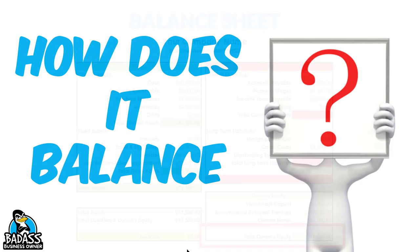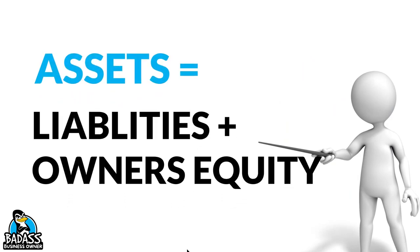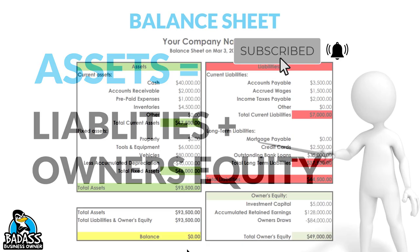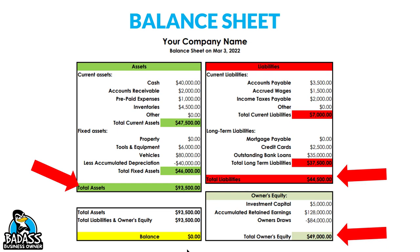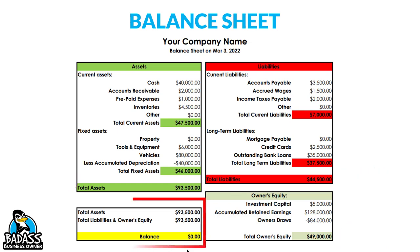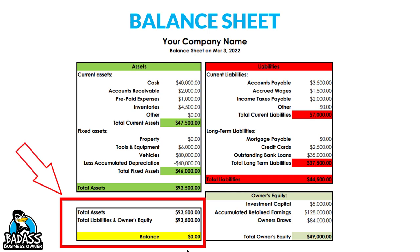Now let's see why this is called a balance sheet. Our balance sheet states: assets equal liabilities plus owner's equity. So in our example: our assets were $93,500, our liabilities were $44,500, and our owner's equity was $49,000. If we take $49,000 plus $44,500, it equals $93,500. You can see over here that it balances — $93,500 in assets minus those liabilities and owner's equity balances to $0. And as you can see right here, it absolutely does.